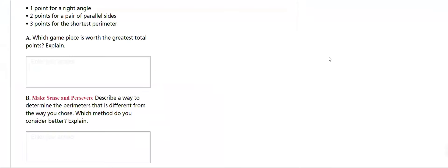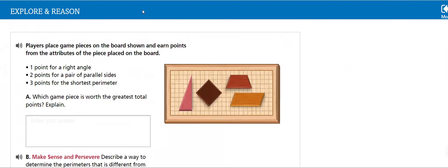Now first thing in this lesson, we will explore what is meant by our lesson. Throughout this question, players place game pieces on the board shown and earn points from the attributes of the piece placed: one point for each right angle, two for a pair of parallel sides, three for the shortest perimeter. Which game piece is worth the greatest total points?